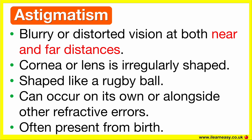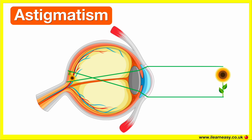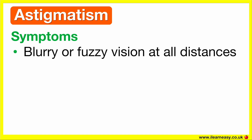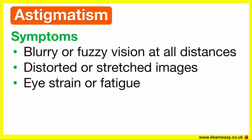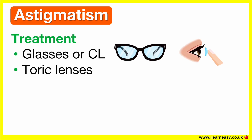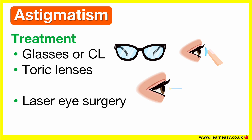Astigmatism may be present from birth and can remain stable or change over time. With astigmatism, light focuses on multiple points, either in front of or behind the retina. This causes overall blurred or wavy vision, no matter the distance. The treatment for astigmatism is glasses or contact lenses. Special types of lenses are used, known as toric lenses. These lenses compensate for the uneven curve of the cornea. Laser eye surgery may also be an option, reshaping the cornea to allow light to focus directly onto the retina.